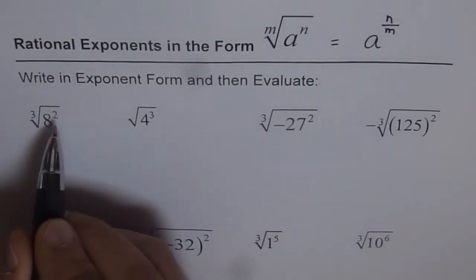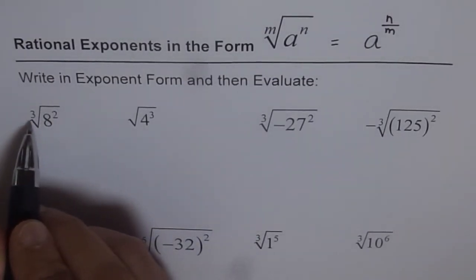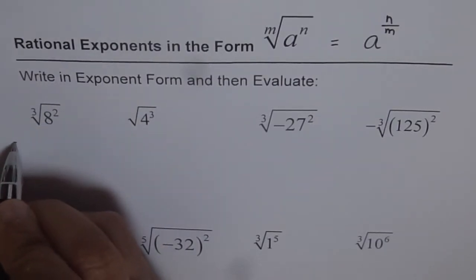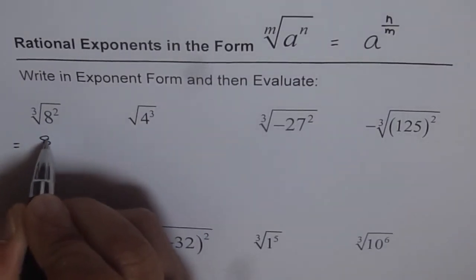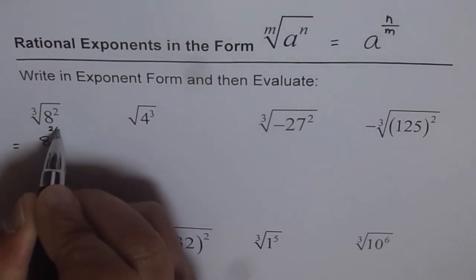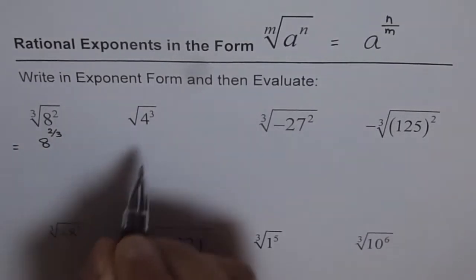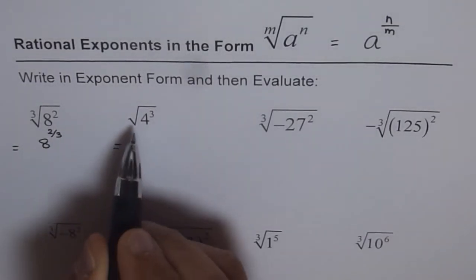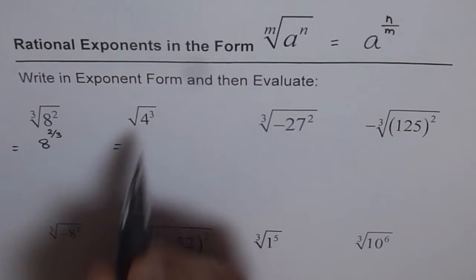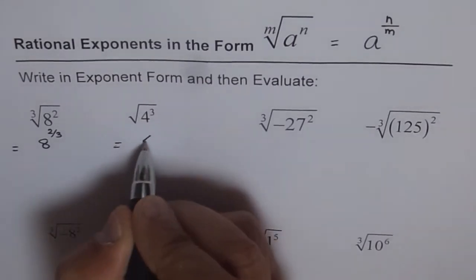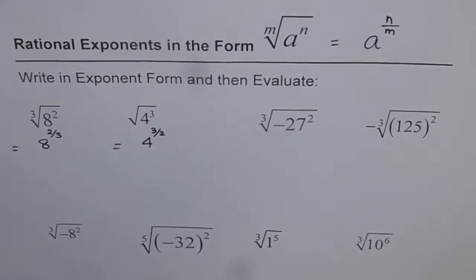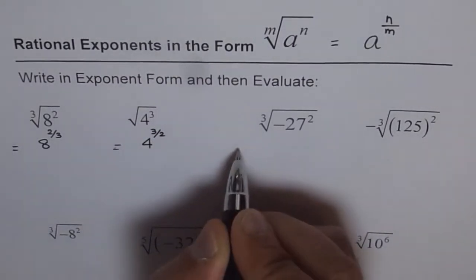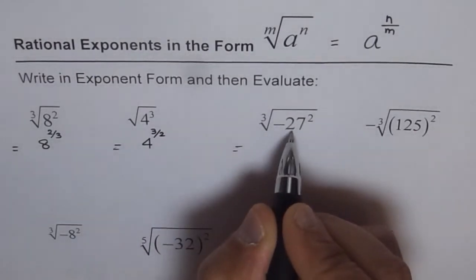So we have 8 squared and 1 third — that is the cube root of 8 squared. We can write this as 8 to the power of 2 over 3. Similarly, we can write the square root of 4 cubed, which means 4 to the power of 3 over 2. Now here we have minus 27.